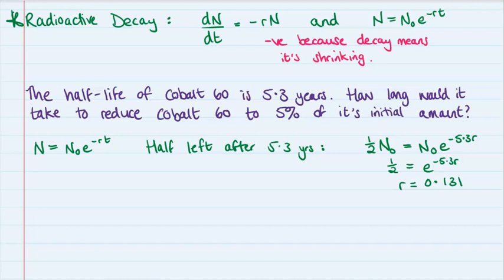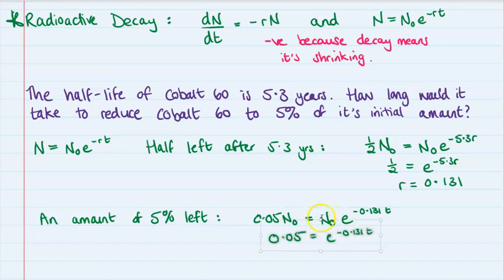Now we want to know how long it will take for that amount to get down to 5% instead of a half. So for there to be 5% left, we need this to be equal to 0.05 of the initial amount. So again, we're going to go through and solve that. So cancelling the n zeros, we get this. So this is our equation to solve. And that will happen at 22.9 years.